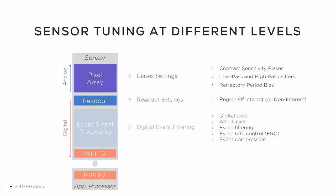If every pixel in the sensor array performs a change detection at the same time, theoretically we can reach several giga events per second. However, the capacity of the readout on the IMX636 sensor is limited to 3 giga events per second. This is why you need to control your event rate by concentrating on the most useful information without acquiring too much noise. There could also be constraints imposed by a processing unit — for example, a few hundred mega events per second on a laptop, or a few dozen mega events per second on an MPU or embedded platform. In this video, we're going to cover only the analog settings, such as the biases and the region of interest.